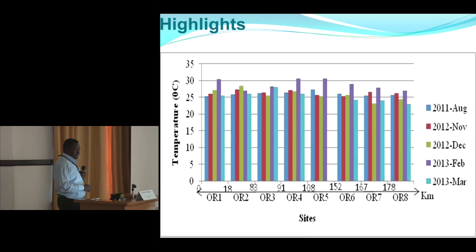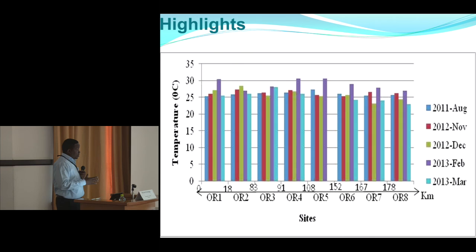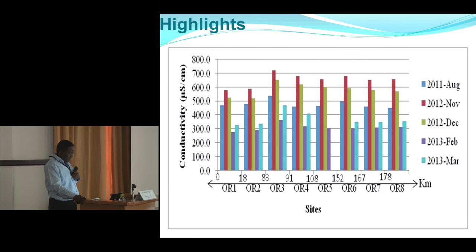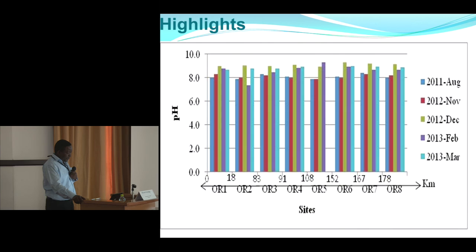Regarding physicochemical parameters, one slide summarizes everything. For different parameters, there was both temporal and spatial variability. Measuring from upstream to downstream, temperature was highest across all sites for February 2013. For conductivity, the highest values were recorded in November 2012. For pH, the highest values were recorded in December 2012.